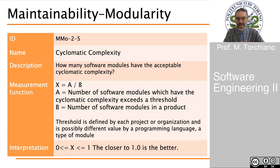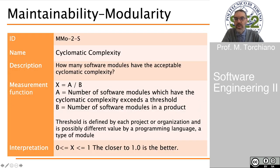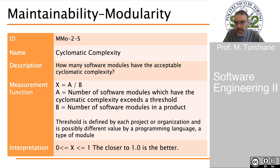A final example is cyclomatic complexity: how many software modules have acceptable cyclomatic complexity? Here A is the number of software modules where cyclomatic complexity exceeds a given threshold, and B is the total number of software modules in the product. The threshold is not defined in the standard — it can be specific to an organization or programming language. This measure is designed to be in the range 0 to 1, with closer to 1 being better.